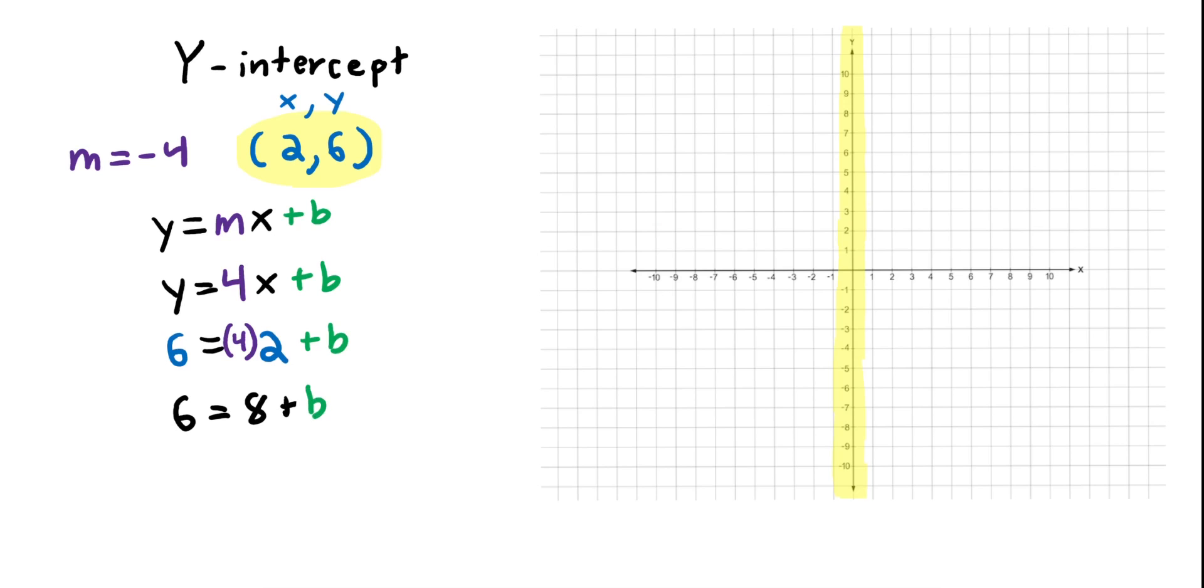So all we want to do is leave the b alone on its side. So to isolate the b, we do a negative 8, negative 8. We're going to subtract 8 from the right and we're doing the exact same thing to the left. And we're left with our final answer of b equals negative 2. So that's your final answer. You have it. b equals negative 2. So on the coordinate plane, b would be right there.